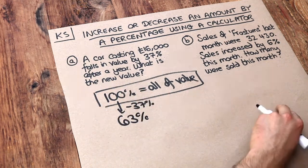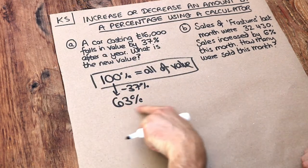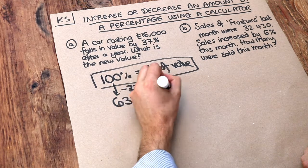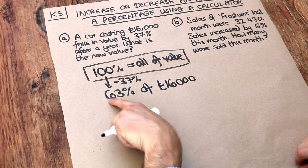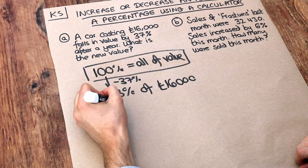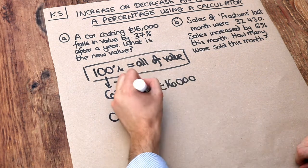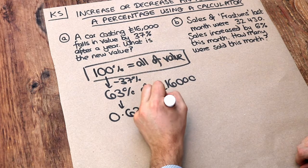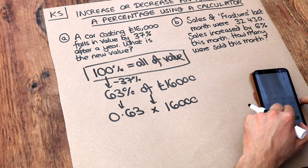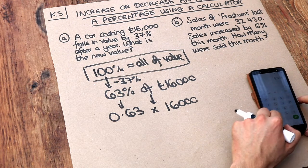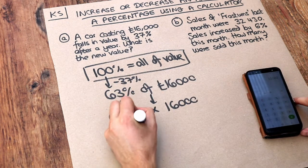So the car has fallen to 63% of its value and that means we want to find 63% of £16,000. Now we saw in a previous video how to do this. Remember we just convert that percentage into a decimal. So 63% as a decimal is 0.63. The word of you can just replace with times and then we've got this £16,000 here. And then if I just do that on my calculator, 0.63 multiplied by £16,000 is equal to £10,080.